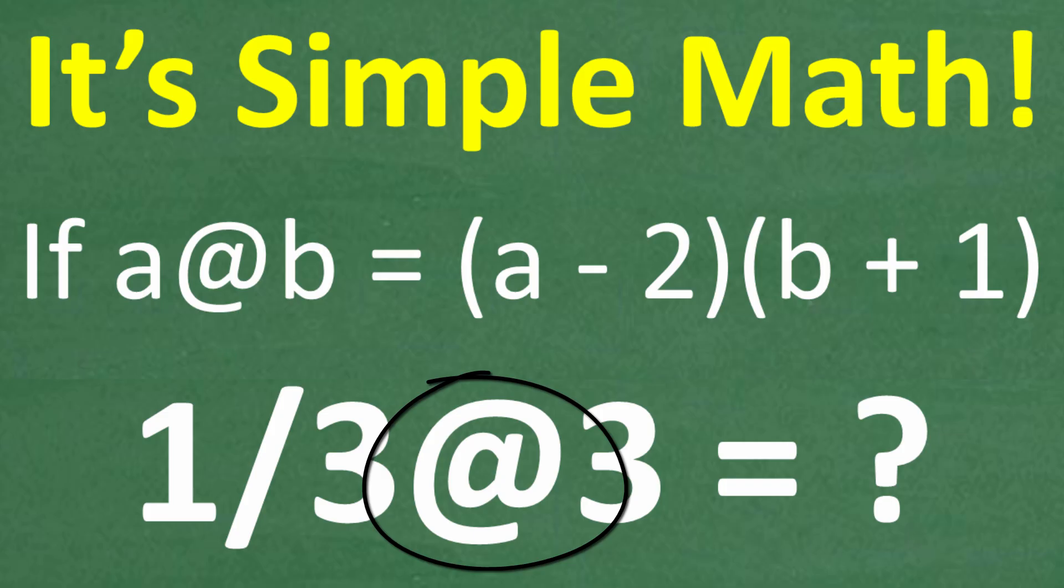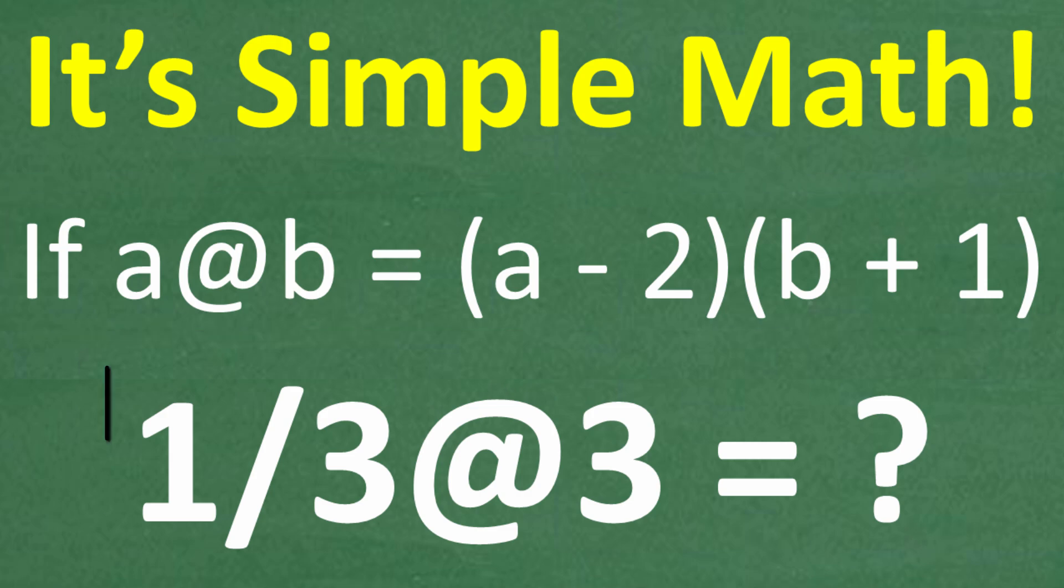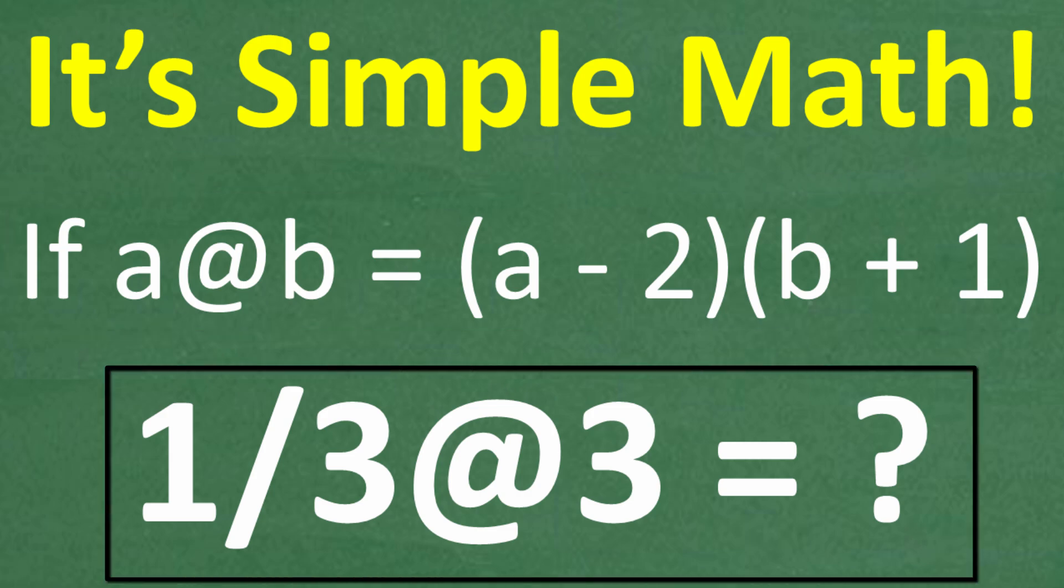Well, yes, indeed, I understand that, but let's go and read the problem because everything you need to solve the problem is right here. So the problem is the following. If a at b is equal to a minus 2 times b plus 1, what is one third at 3 equal to?